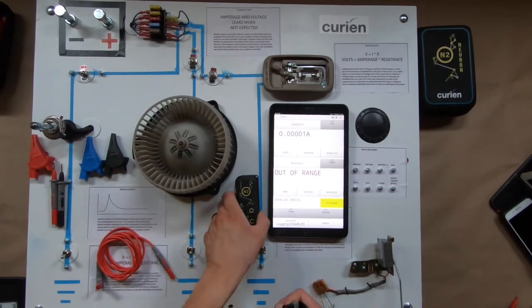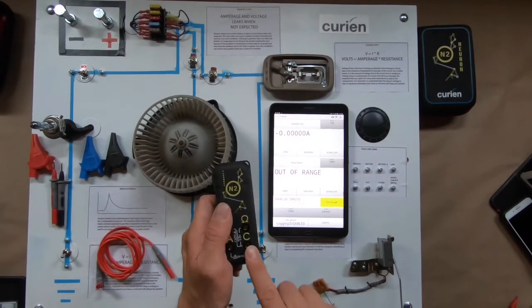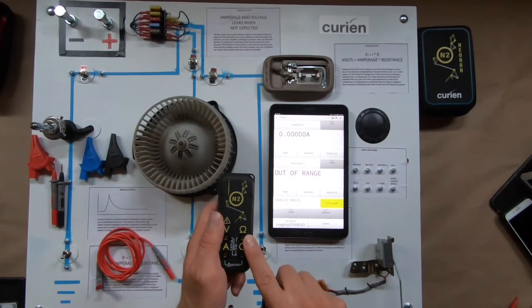Now, I am going to go ahead and point out here on the tool, as you can see, you've got your ground port and your ohms port.